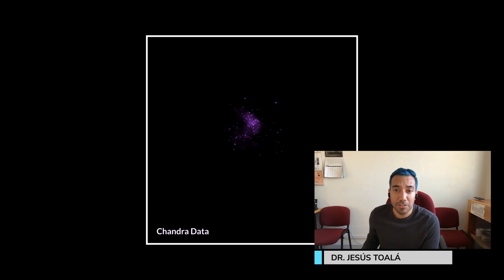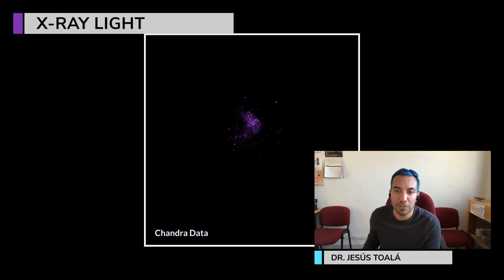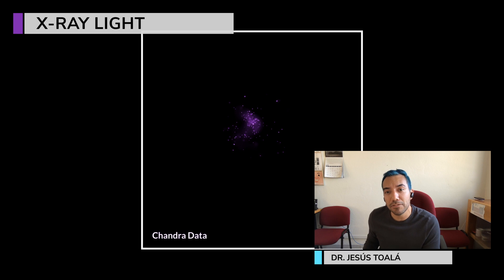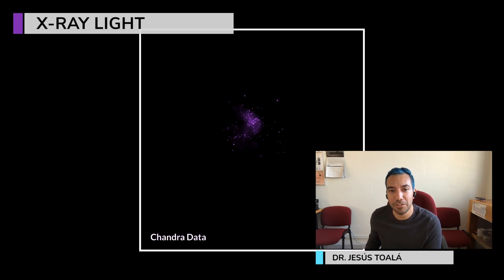In the X-rays, we see the hottest contribution of the gas, which is produced by the stellar winds from the most massive stars in the region. My favorite thing about the Eagle Nebula is the fact that we can use multi-instrument observations to characterize the origins of stars. Multi-wavelength observations help us peer into a phenomenon with different glasses — in this case, stellar nurseries.